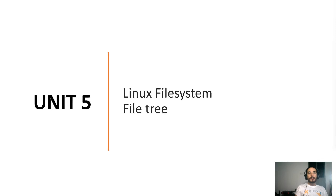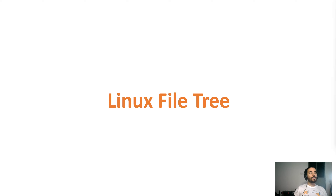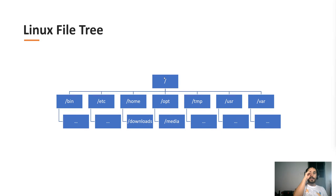In this video we are going to keep talking about the Linux file system and go deeper, specifically into the file tree. The Linux file tree always looks something like this, but specifically has one feature: there's always one root folder, one root directory, which is slash. There's always going to be only one, and from there everything branches.